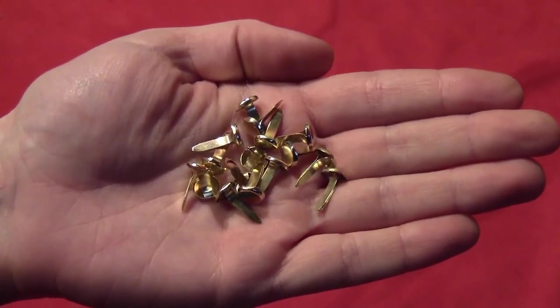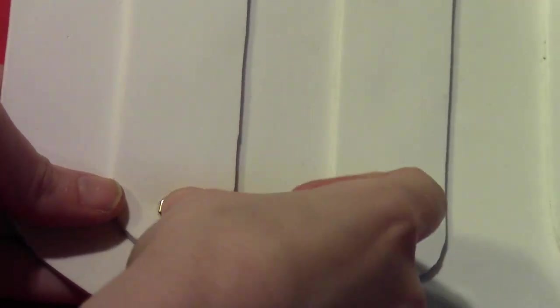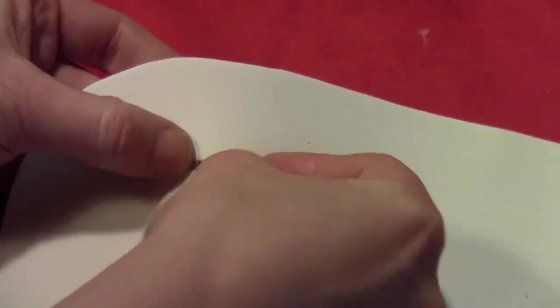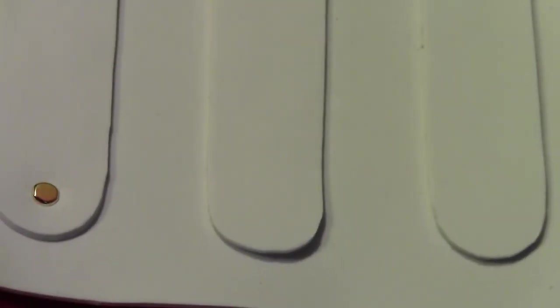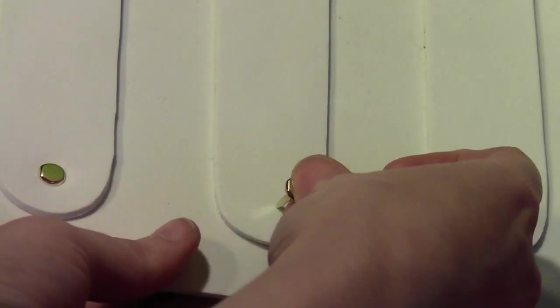Take some gold paper fasteners and put one in each end of the long thin rectangles. Spread the tails out on the back side to hold them in place.